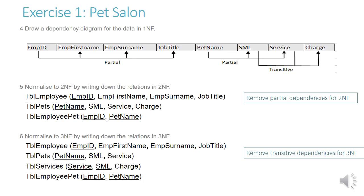For question 5, normalize to 2NF: table employee has EMP ID, EMP first name, EMP surname, and job title. Table pets has pet name, SML, service, and charge. Table employee pet has EMP ID and pet name. We have removed the partial dependencies for 2NF, and the employee and pet tables are related by a third table called table employee pet.